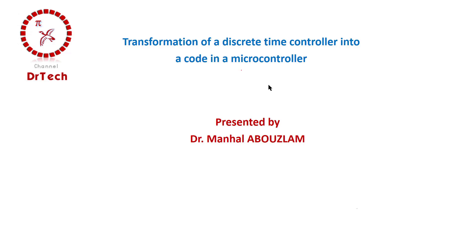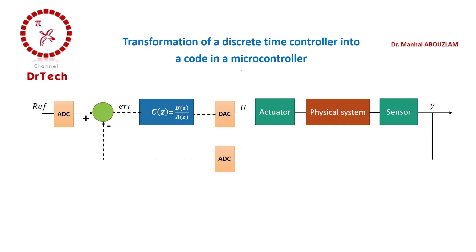In order to be more clear, let me take the following closed loop where we have a physical system with an activator and a sensor. We also have the controller, which is in our case a transfer function in discrete time.